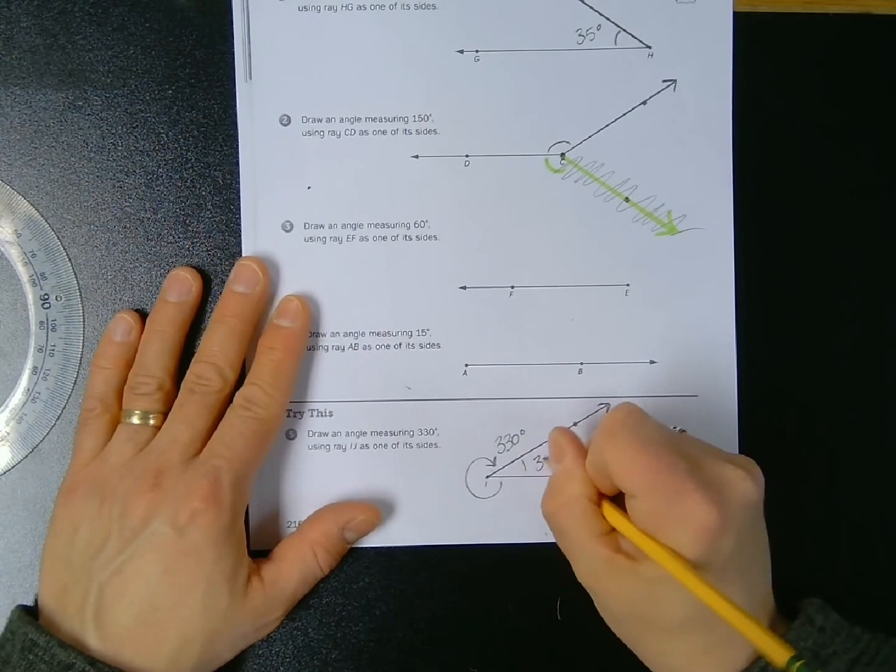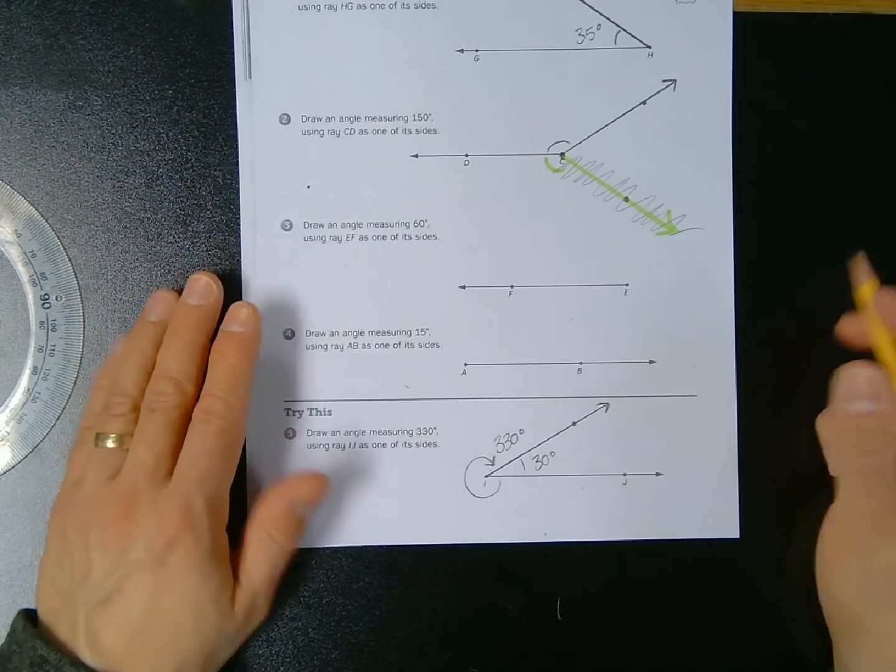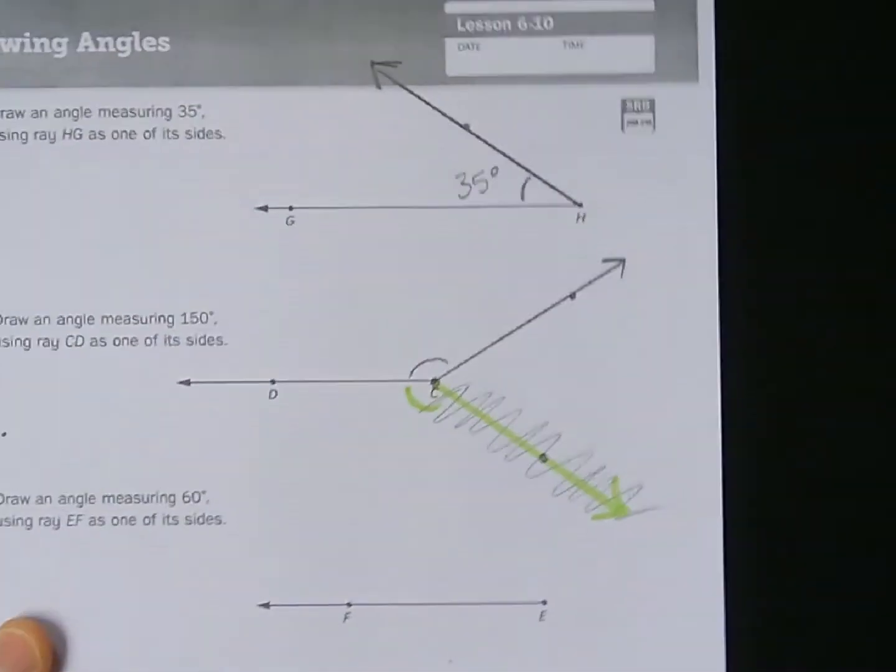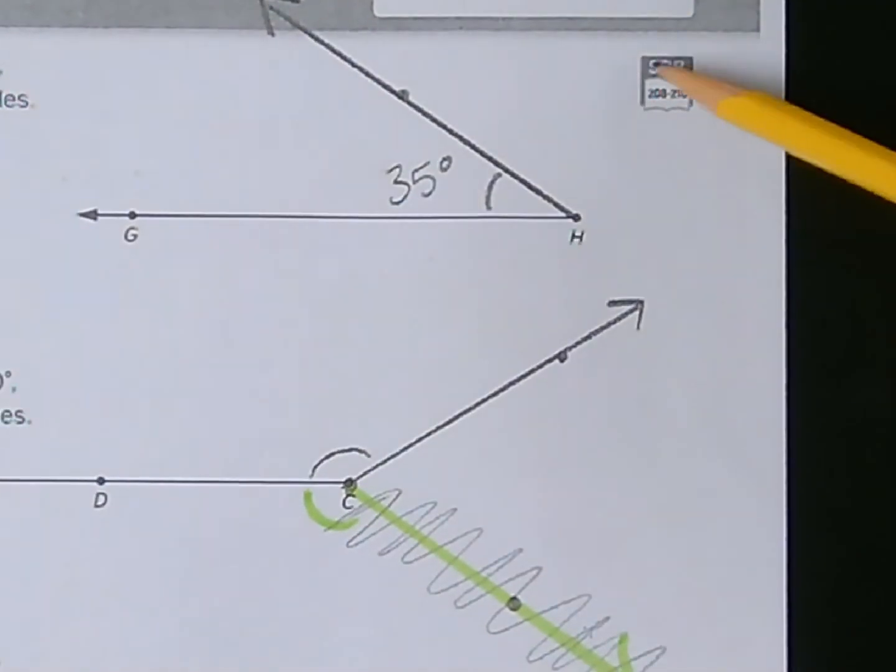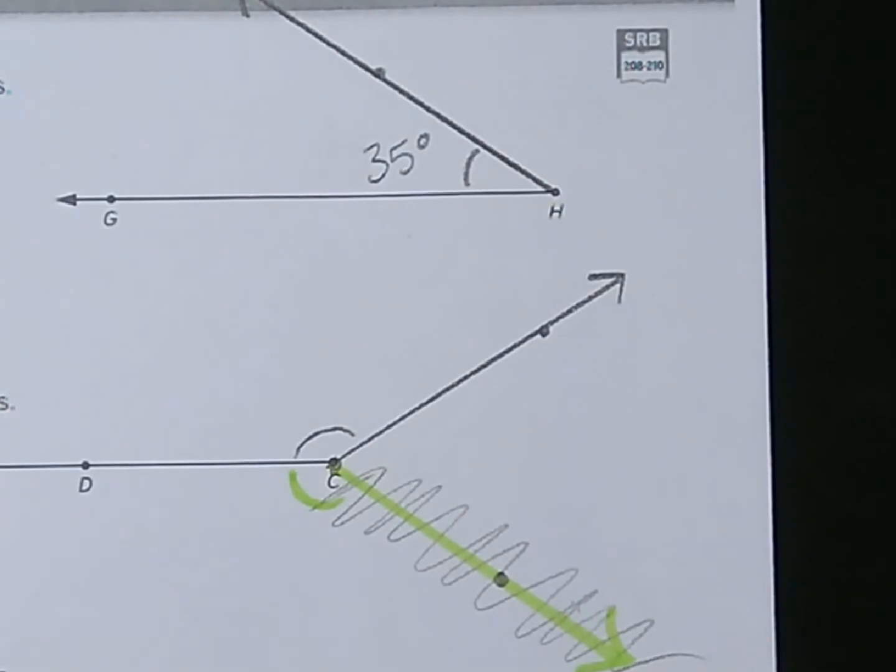If you're confused about all this, take a look at this corner symbol where it says SRB student reference book pages 208 and 210. It gives you more detail about these concepts.